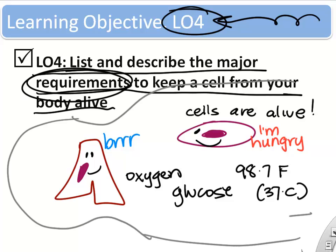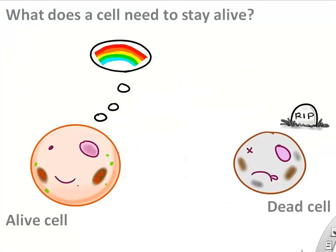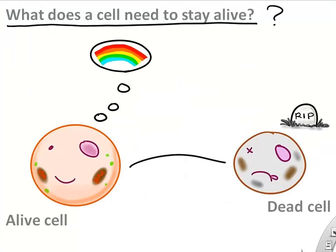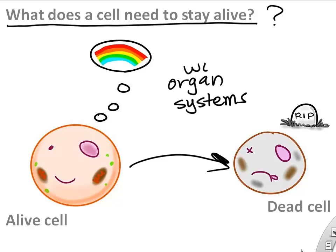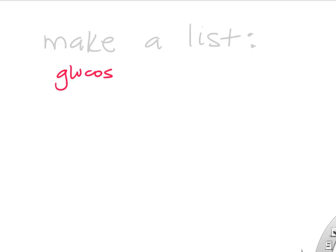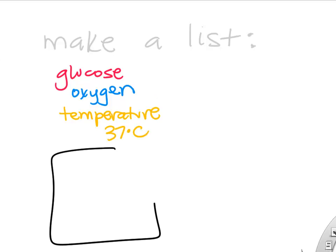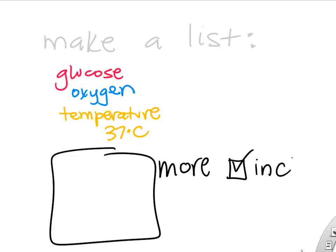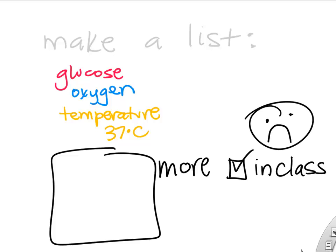Things like oxygen, glucose, and temperature are all important to keep cells alive, both inside your body and when grown by scientists in the lab. What does a cell actually need to stay alive? Your body thinks about this constantly, and all the organ systems work together to give cells what they need. Cells need glucose for energy, oxygen to help make energy, and a fairly constant temperature — about 37 degrees Celsius.